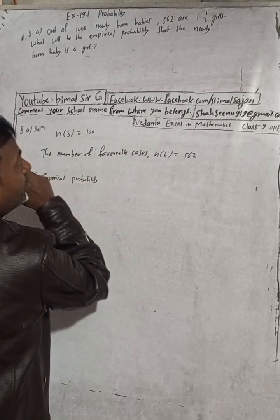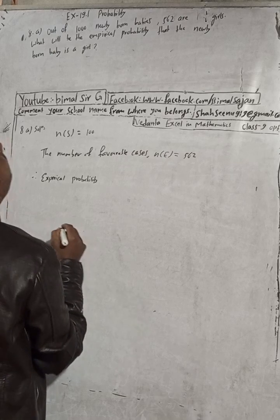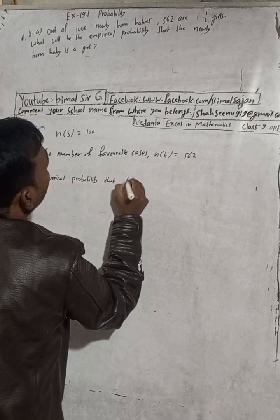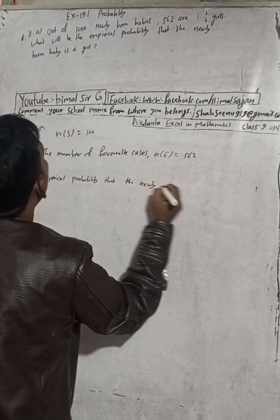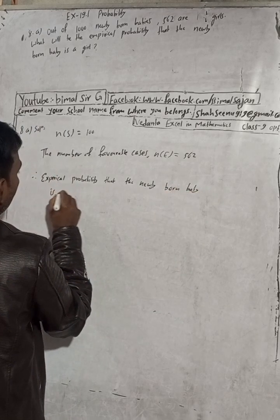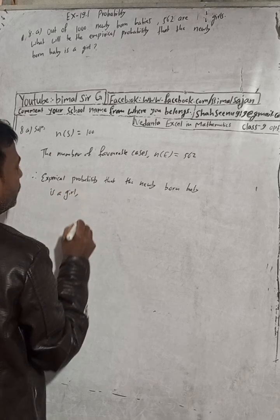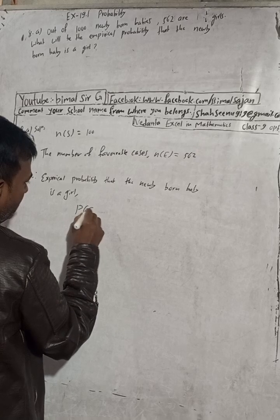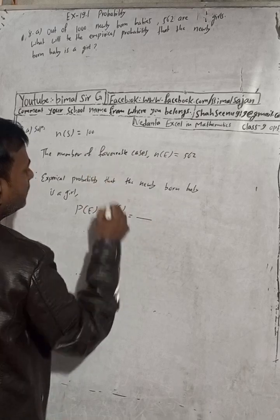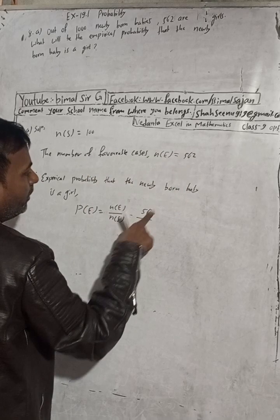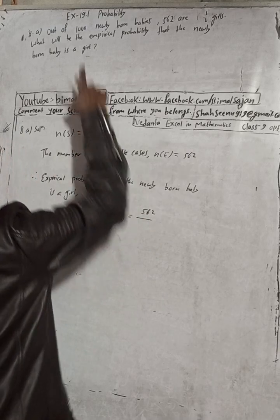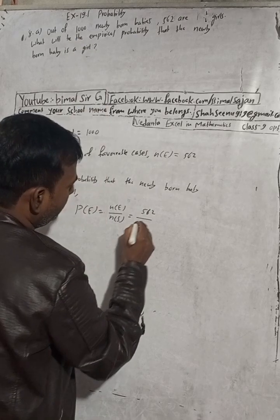Therefore empirical probability of a newly born baby being a girl, P(E), is equal to n(E) by n(S). Using the same formula, here n(E) is 562 and the sample n(S) is 1000, not hundred, this is thousand.